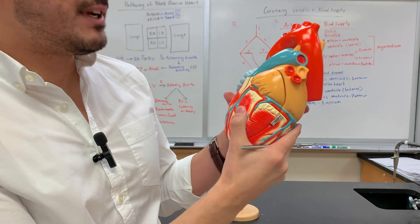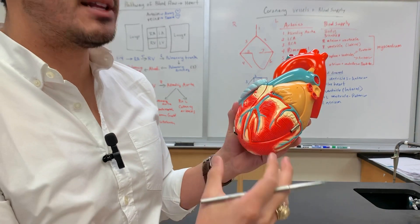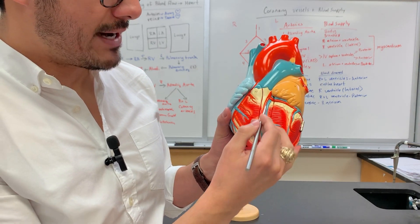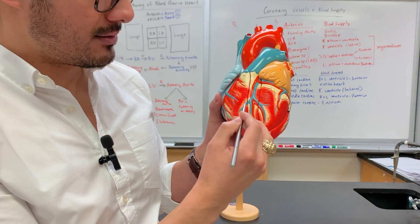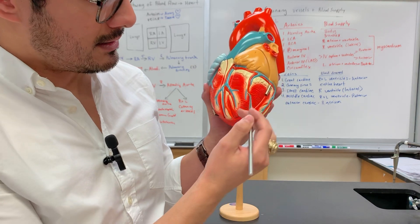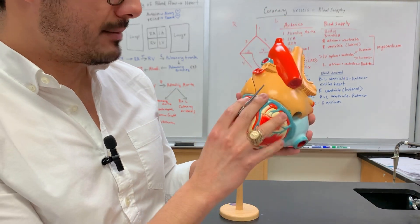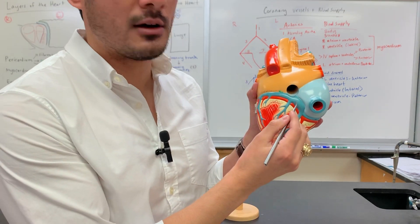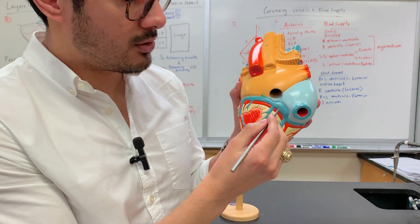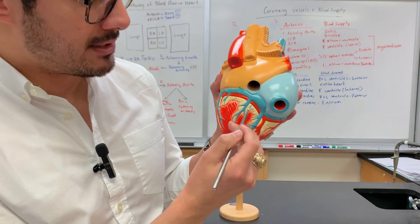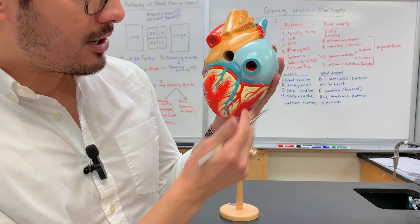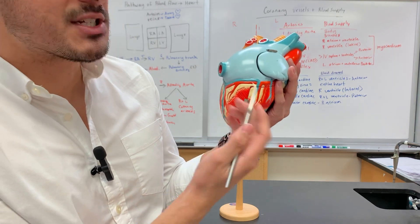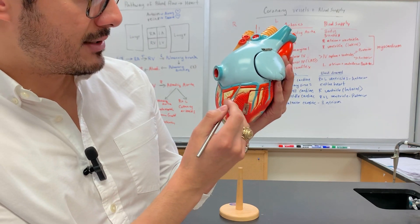For the venous system draining the heart: in the front this is the great cardiac vein with all its branches, which wraps all the way around. Remember all of these veins lead to the coronary sinus, which then goes into the right atrium. This one is the middle cardiac vein, and then the small cardiac vein has only one branch coming this way.